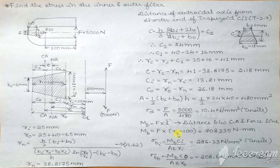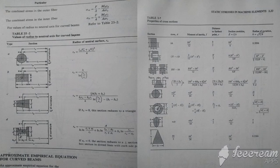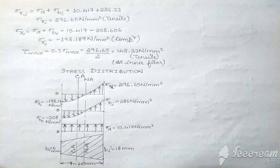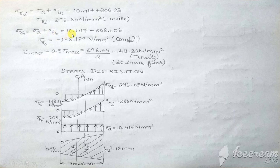Next we find the resultant stress and plot the stress distribution curve. The resultant stress at the inner fiber, Sigma Ri, is obtained by adding the direct stress plus bending stress at the inner fiber: 10.417 + 286 = 296.65 N/mm², which is tensile. The resultant stress at the outer fiber is the direct stress plus bending stress at the outer fiber. Since bending stress at outer fiber is compressive, it carries a negative sign, giving −198 N/mm² which is compressive.